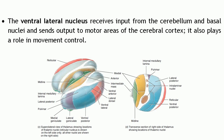The ventral lateral nucleus receives input from the cerebellum and the basal nuclei, and sends output to the motor areas of the cerebral cortex. It also plays a role in the control of movement, similar to the ventral anterior nucleus.